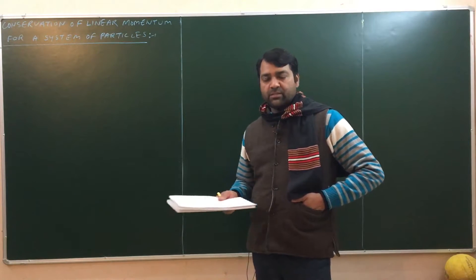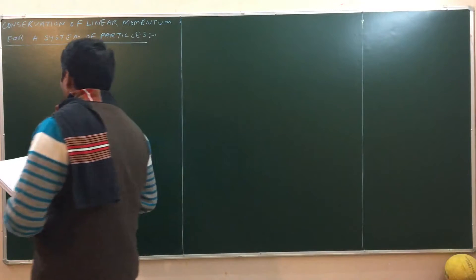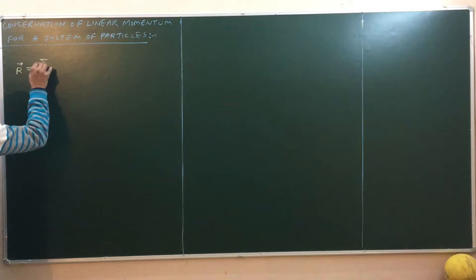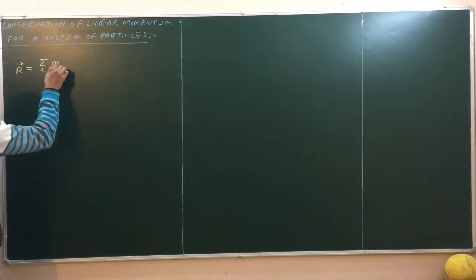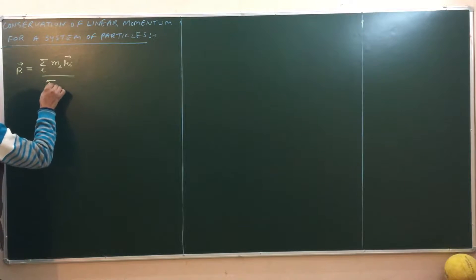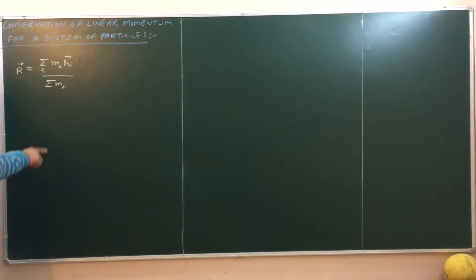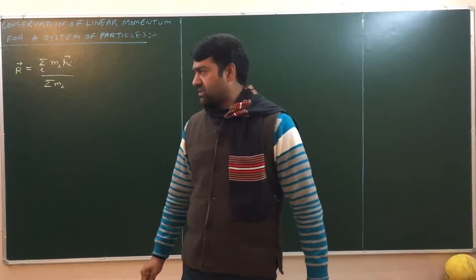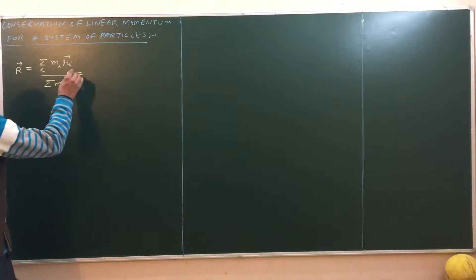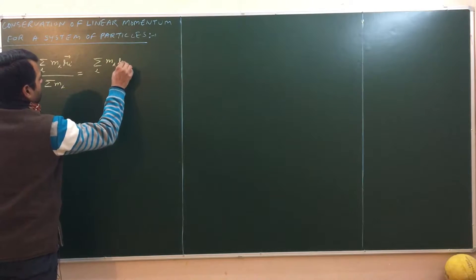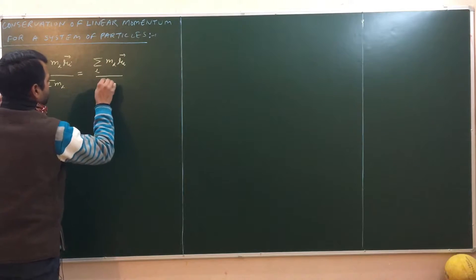As students, in the previous lecture we came across an equation for our vector r. We defined r as summation over i of m_i times r_i vector, divided by sigma m_i. In the denominator, sigma m_i was nothing but the mass of the system. It can also be written as sigma_i m_i r_i vector divided by M.